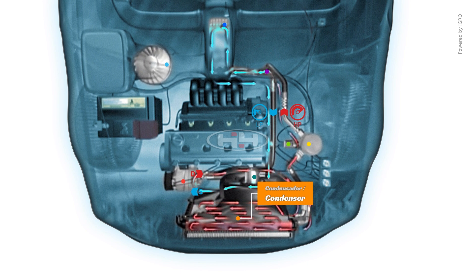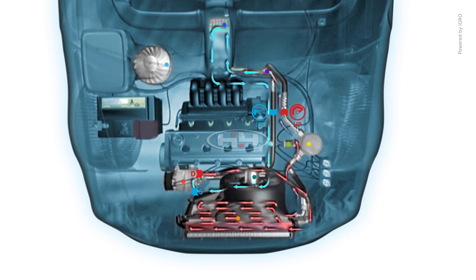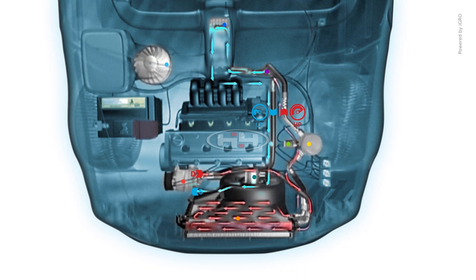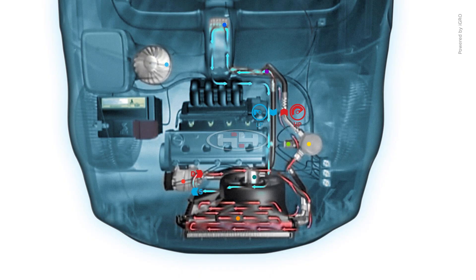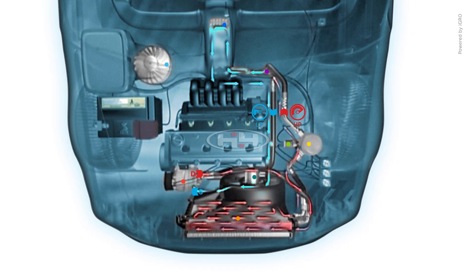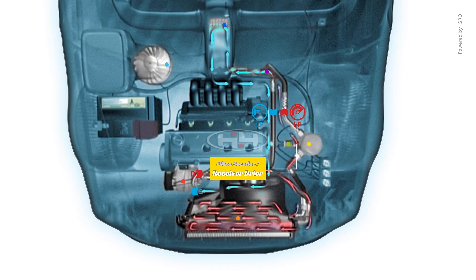The condenser transfers heat to the air. This loss of heat reduces the gas temperature, where it naturally changes state to a liquid. The liquid refrigerant then passes to the gas-liquid separator.